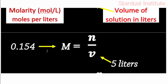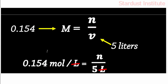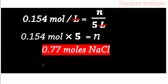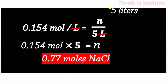Now we can substitute these values into the formula: 0.154 moles per litre equals N divided by 5 litres. The litre units cancel out. We isolate N on the right-hand side, so 5 goes to the left: 0.154 moles times 5 equals N. Our answer is 0.77 moles of sodium chloride.